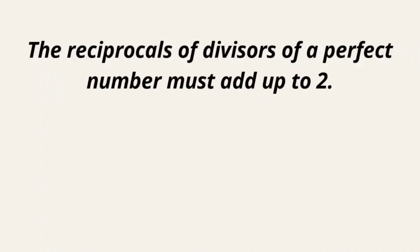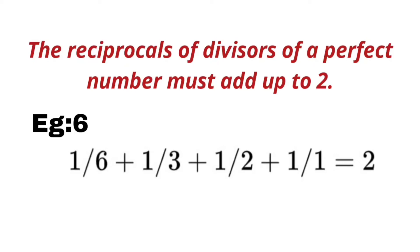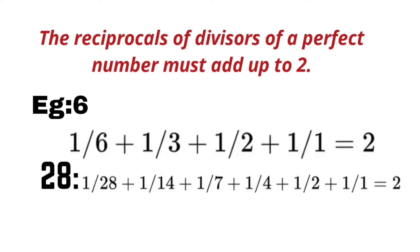The reciprocals of divisors of a perfect number must add up to 2. For example, the reciprocals of divisors of 6 add up to 2. The reciprocals of divisors of 28 add up to 2.